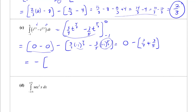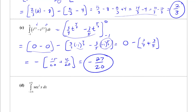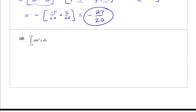So we get minus 15/20 plus 12/20, giving minus 27/20 as our answer.